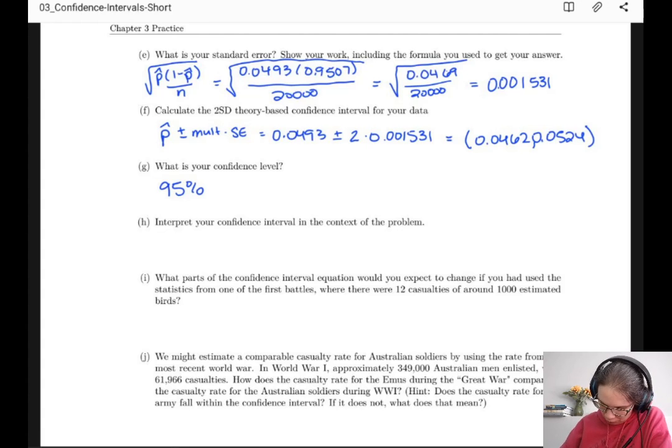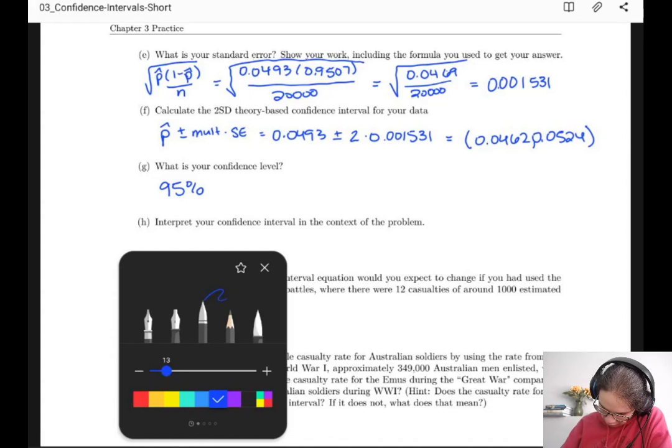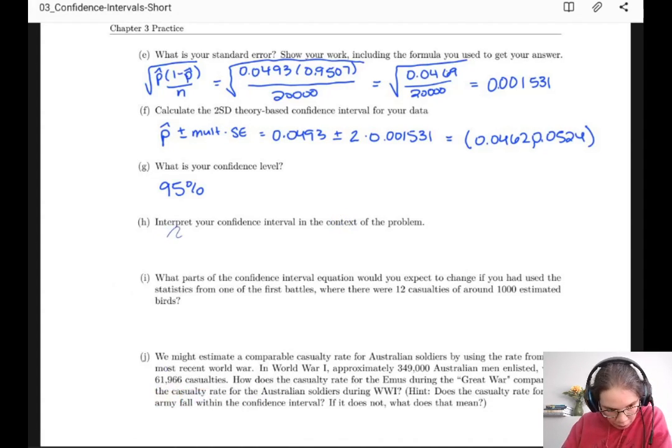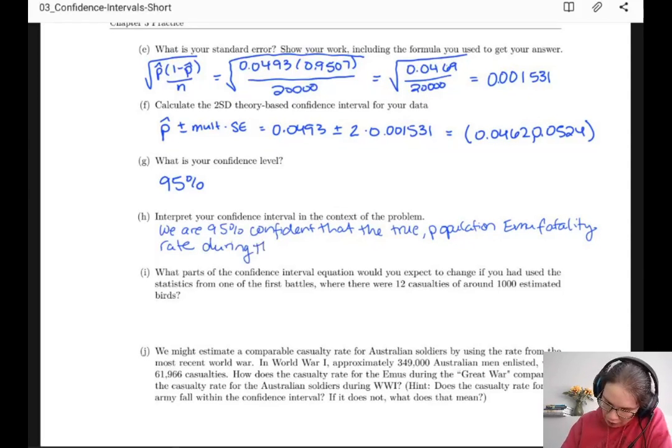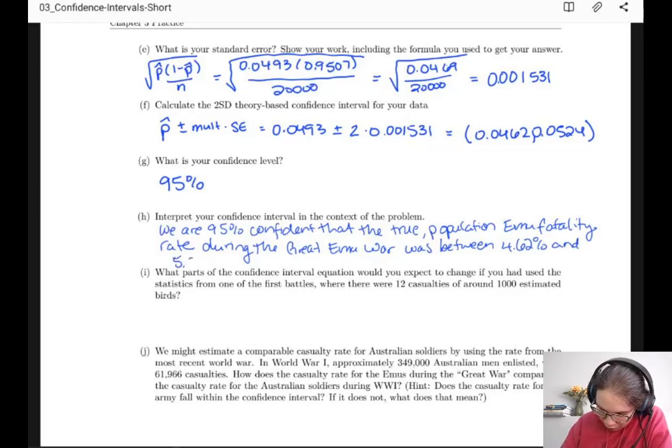And when we interpret this in the context of the problem, we are 95% confident that the true population emu fatality rate during the Great Emu War was between 4.62% and 5.24%.